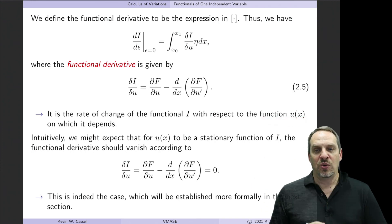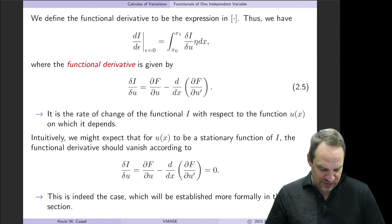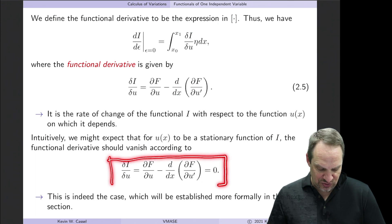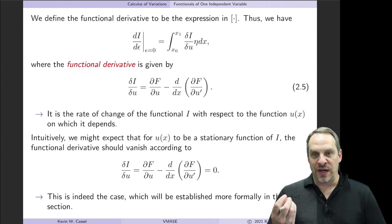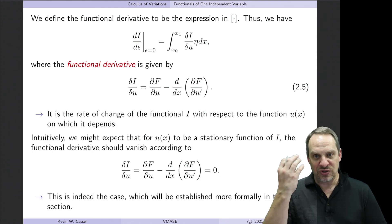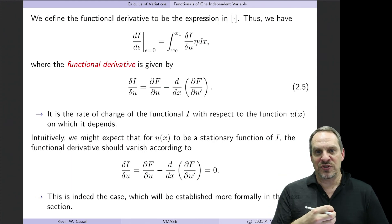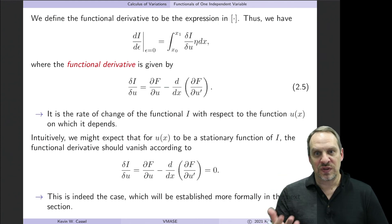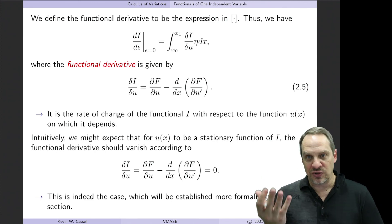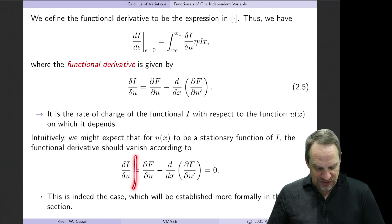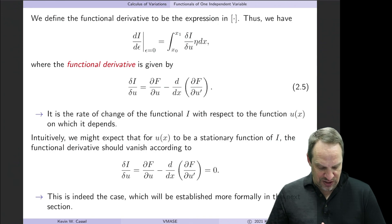This functional derivative is the rate of change of the functional with respect to changes in the function, rather than the rate of change of the function with respect to changes in x. Just like in differential calculus we take the derivative and set it equal to zero to find stationary points, here to find stationary functions we intuitively suppose we do the same thing — set the functional derivative equal to zero. It turns out that this is indeed true, and we'll prove it in the next video.